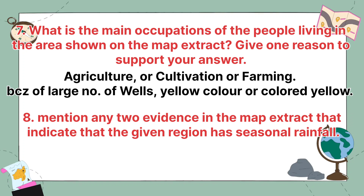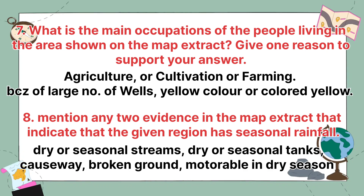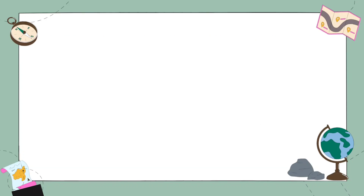Mention any two evidences in the map extract that indicate the region has seasonal rainfall. The evidences are: dry or seasonal streams, dry or seasonal tanks, causeways, broken ground, and roads motorable in dry seasons only. These are the main evidences that show the region has seasonal rainfall.